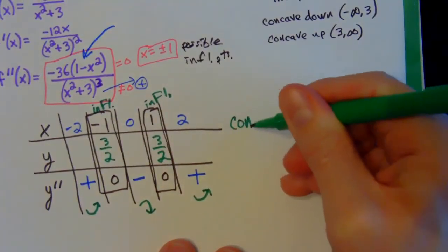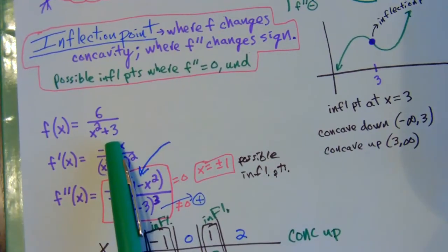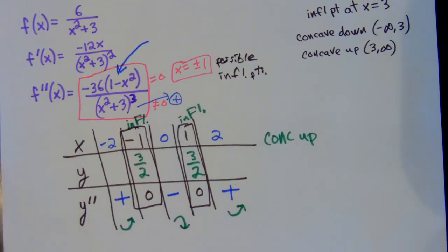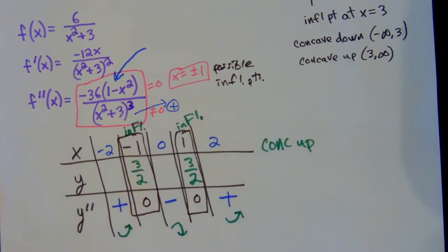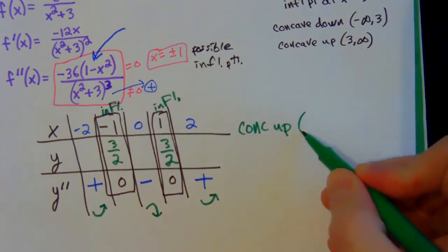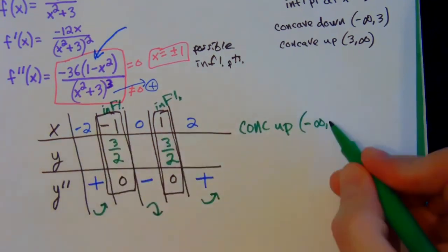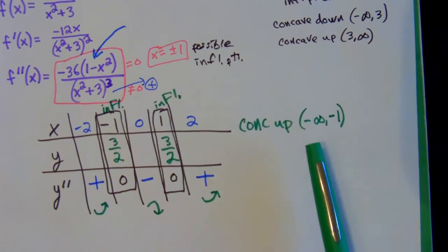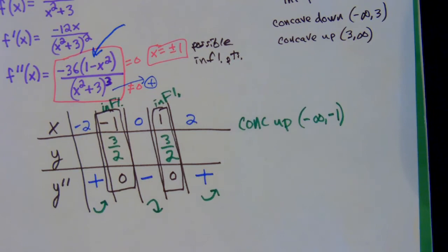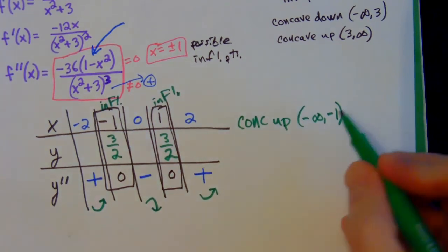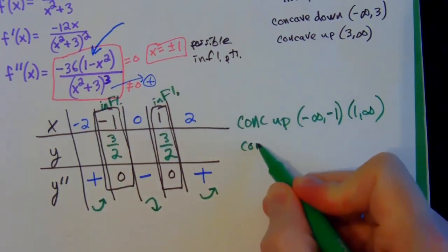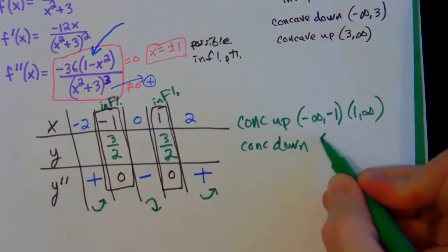The graph is concave up where the second derivative is positive. Since the denominator is never zero, the domain is negative infinity to positive infinity — no domain issues. Concave up from negative infinity to negative one, and also from one to infinity. Always use parentheses for increasing/decreasing and concavity intervals. Concave down from negative one to positive one, where the second derivative is negative.